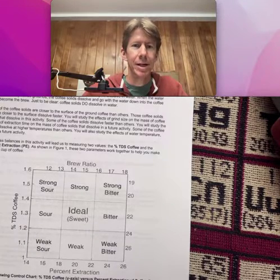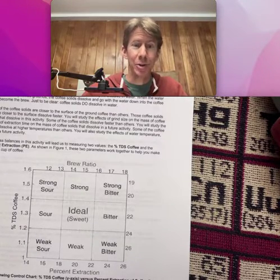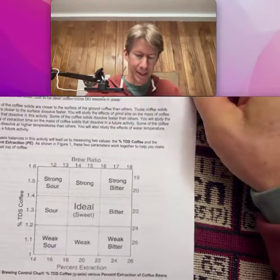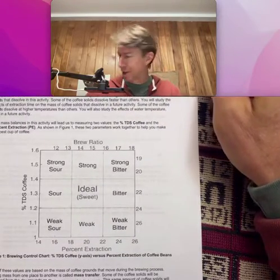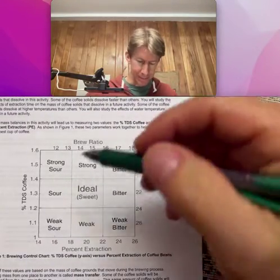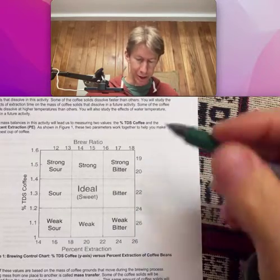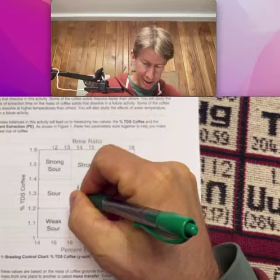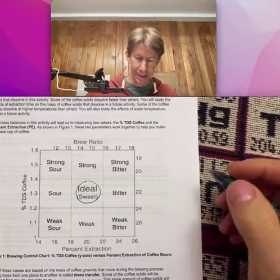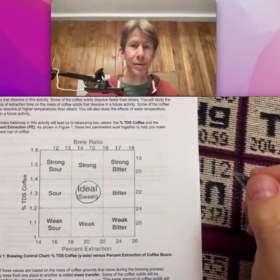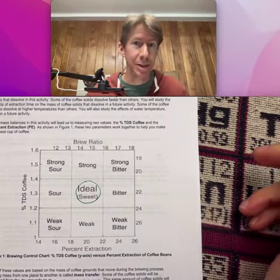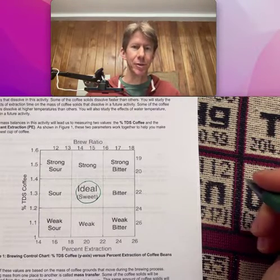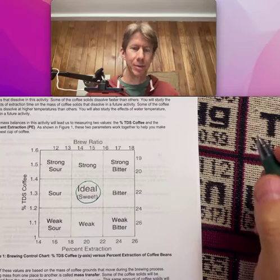Okay, in this activity we're going to optimize the grind. I've got this picture of my brew ratio here, the brewing control chart. We want to be ideally right in the center section. For today's brews and for future activities, maybe we'll alter this.